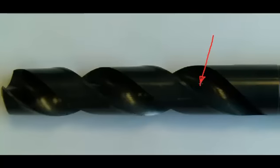At the bottom of the flute is called the web, where the two flutes meet is called the web. And it is fairly thin at the tip and it gets thicker as we move down towards the shank of the drill like a Christmas tree.